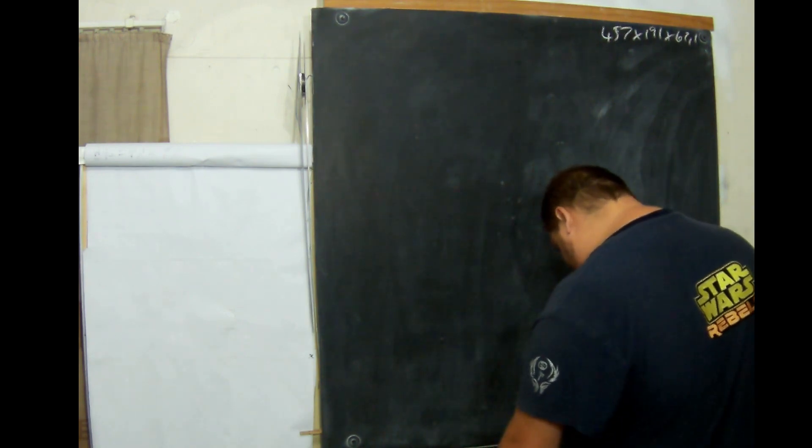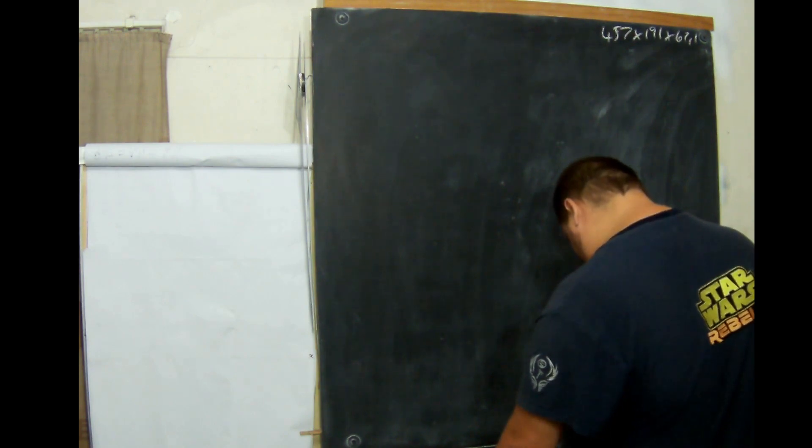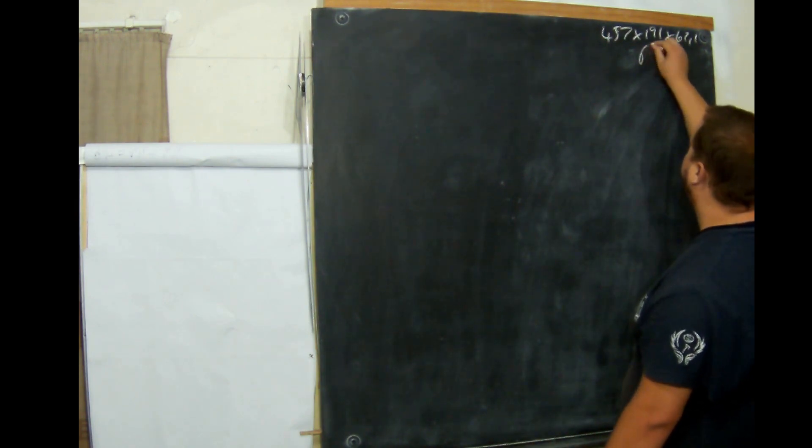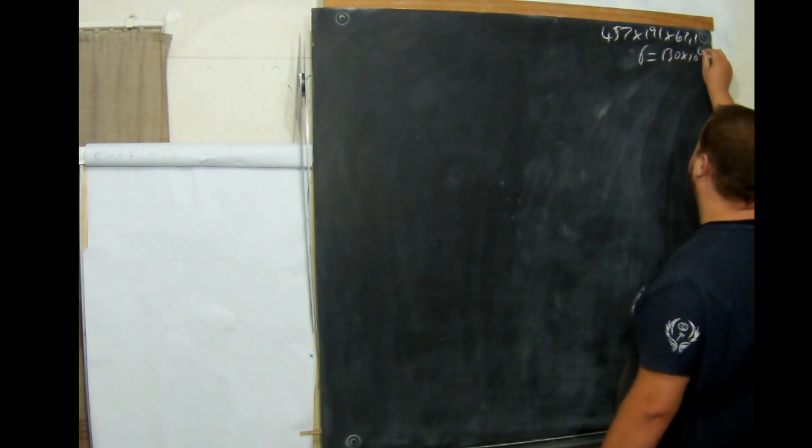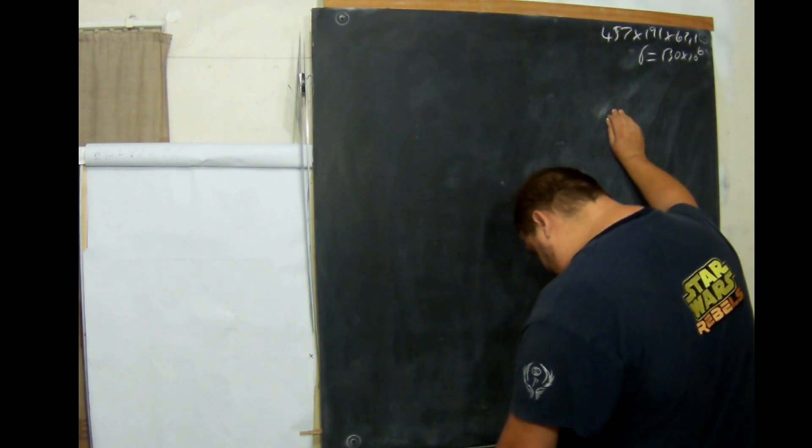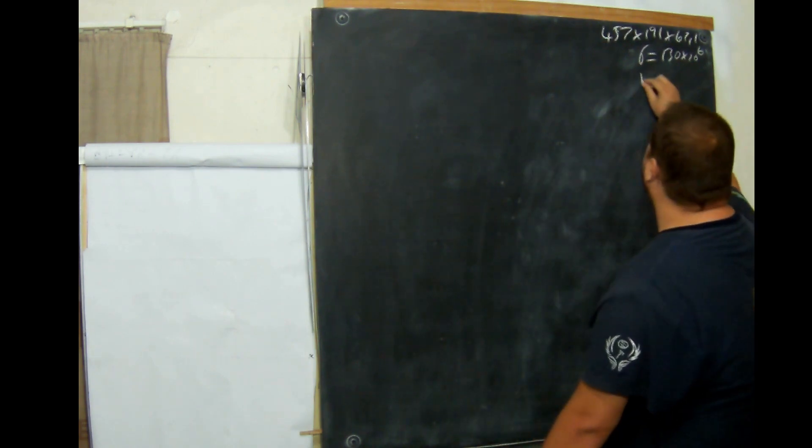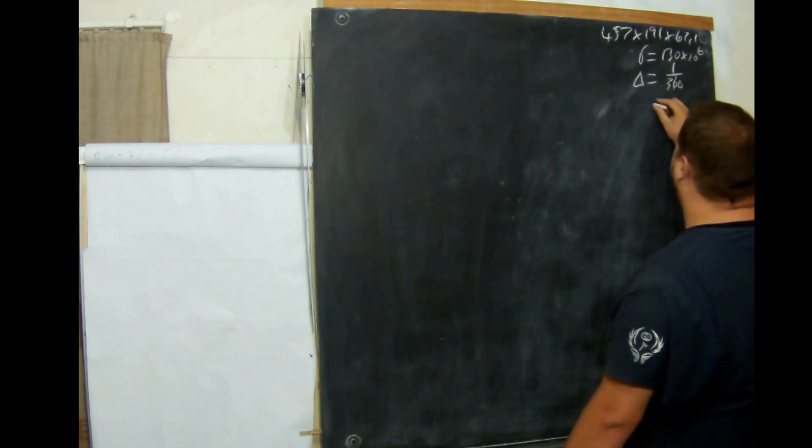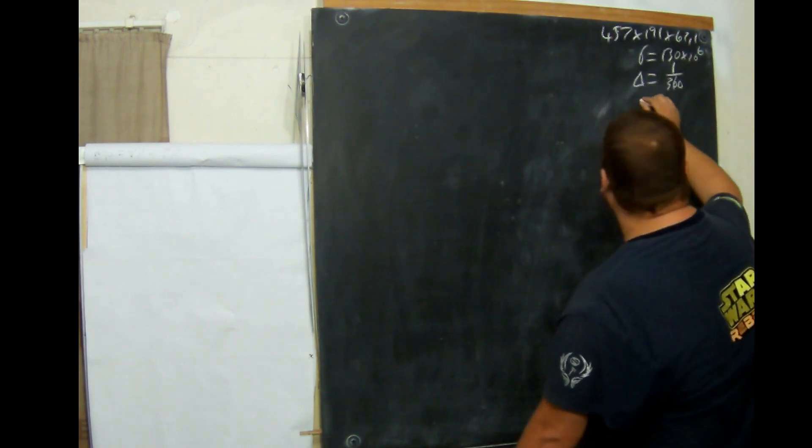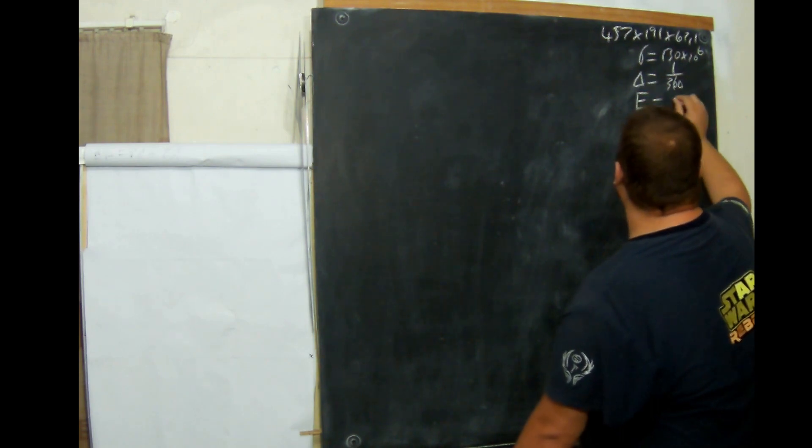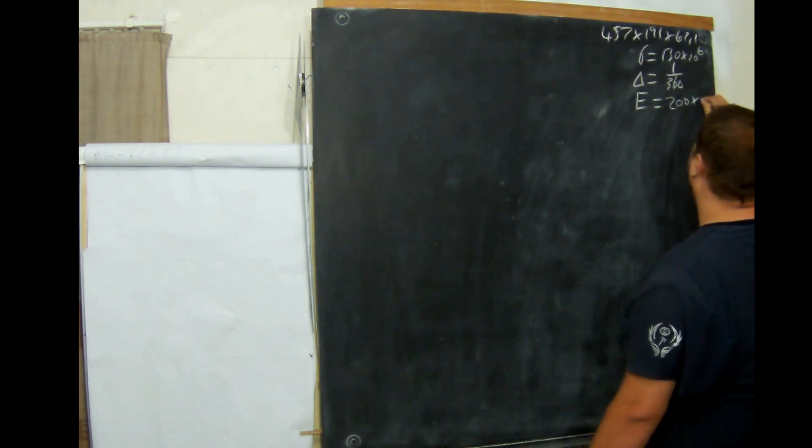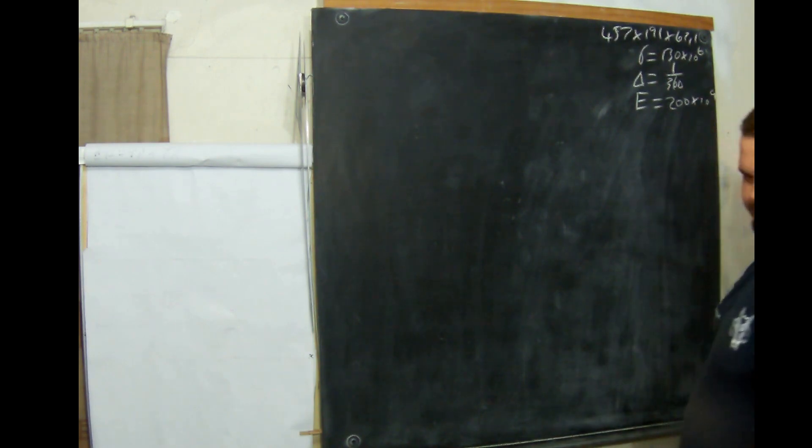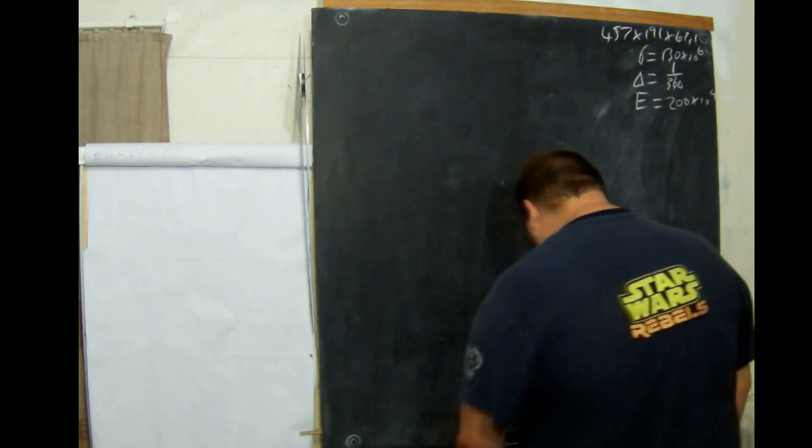Calculate the length of the beam if the maximum stress does not exceed 130 MPa and the deflection is limited to 1 in 360 of the length of the beam. E, the modulus of elasticity is equal to 200 GPa. The second thing to calculate is the deflection of the beam and the third thing to calculate is the weight per meter. So, let's put our values to the right.